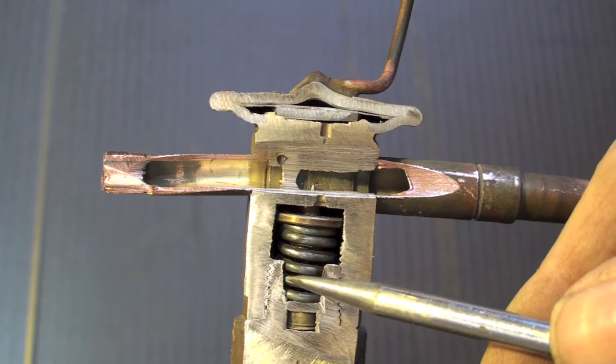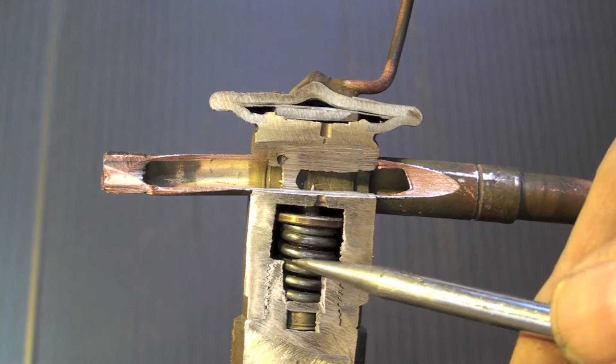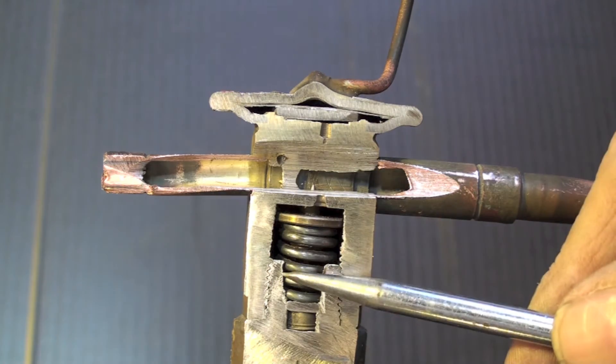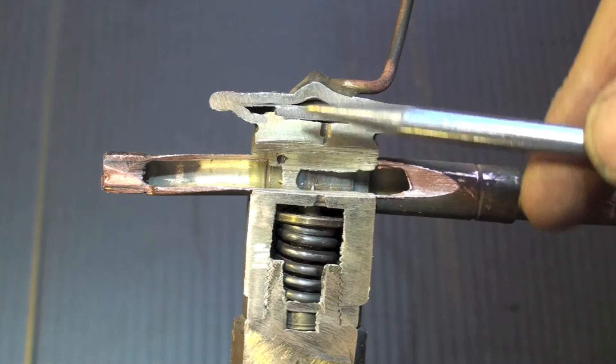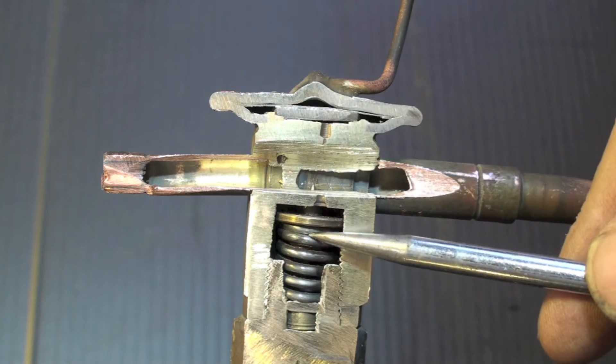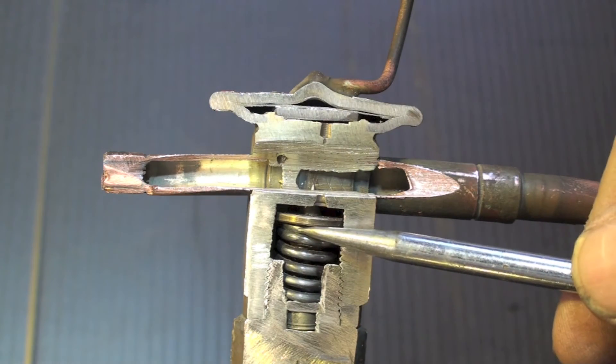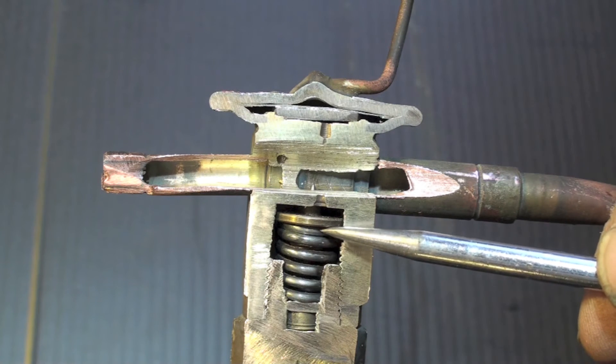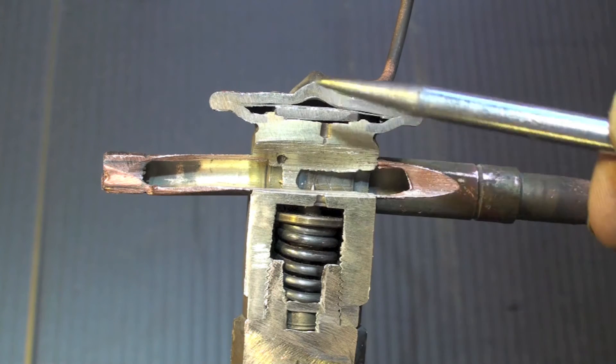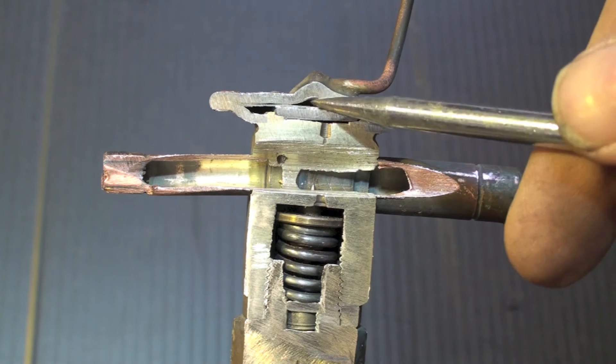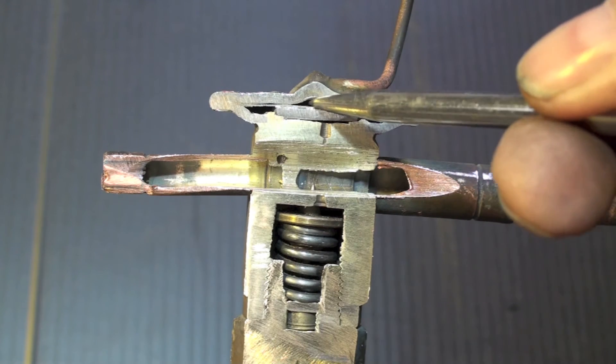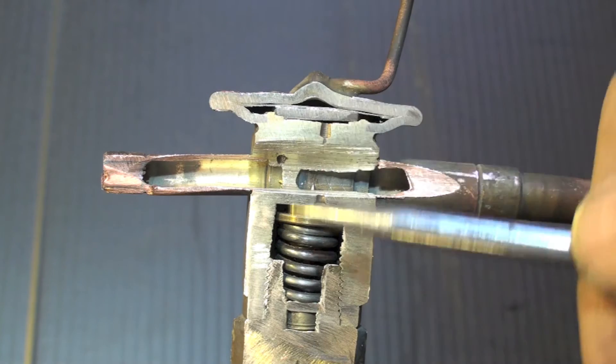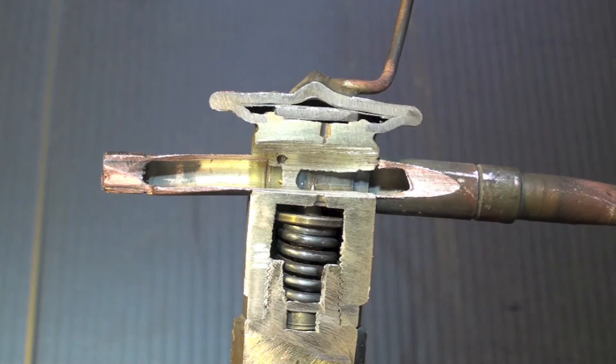However, if there was any superheat, then the pressure here would be higher because that bulb is on the suction line. So the pressure would be higher here than here, so it would push open the valve.